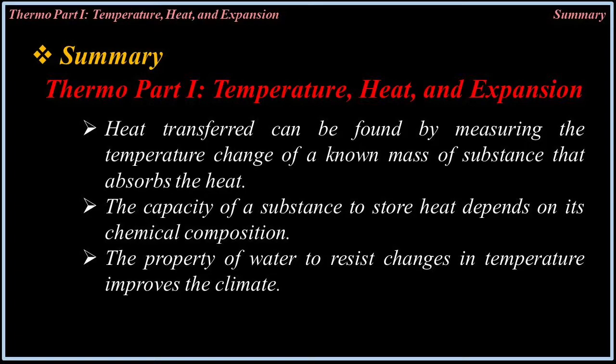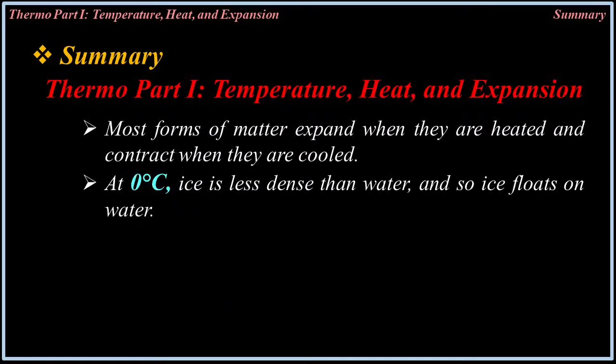Summary — Thermal Part 1: Temperature, Heat, and Expansion. Heat transferred can be found by measuring the temperature change of a known mass of substance that absorbs heat. The capacity of a substance to store heat depends on its chemical composition. The property of water to resist changes in temperature improves the climate. Most forms of matter expand when they are heated and contract when they are cooled. At 0 degrees Celsius, ice is less dense than water, and so ice floats on water.